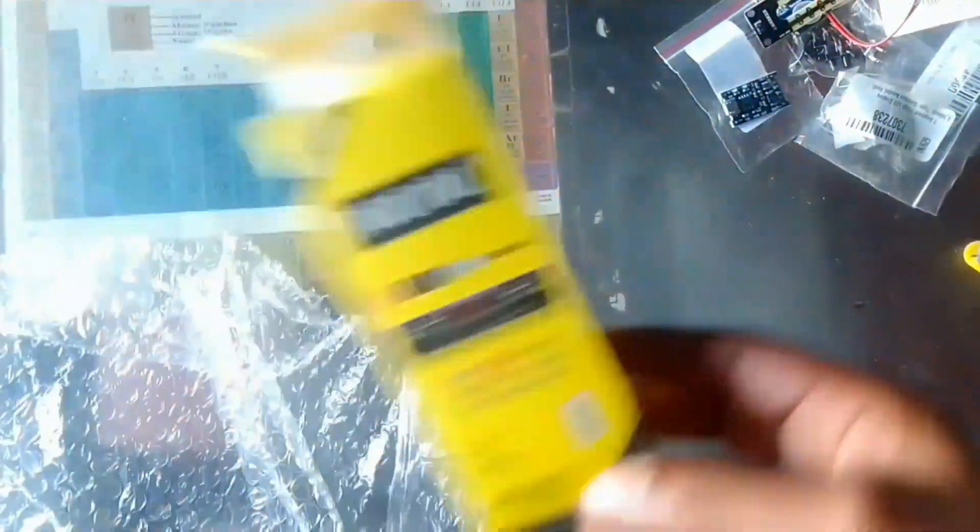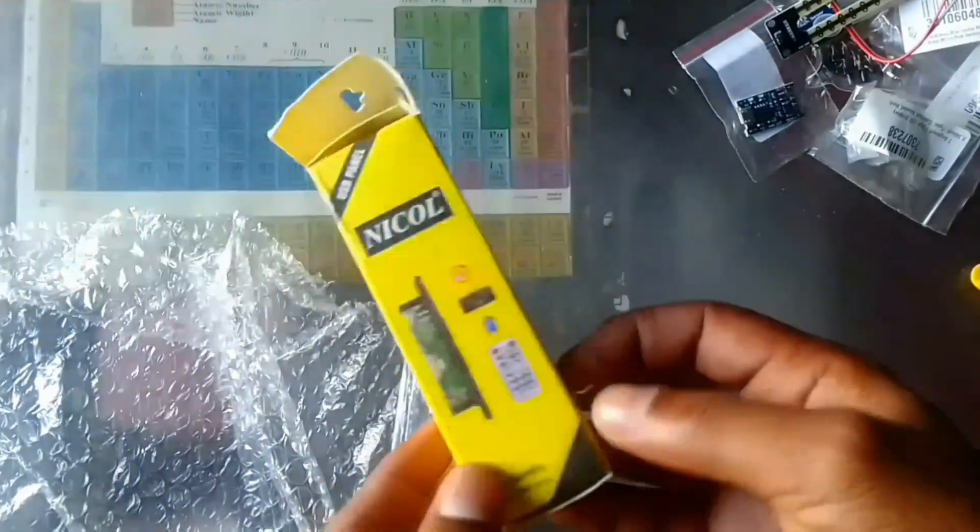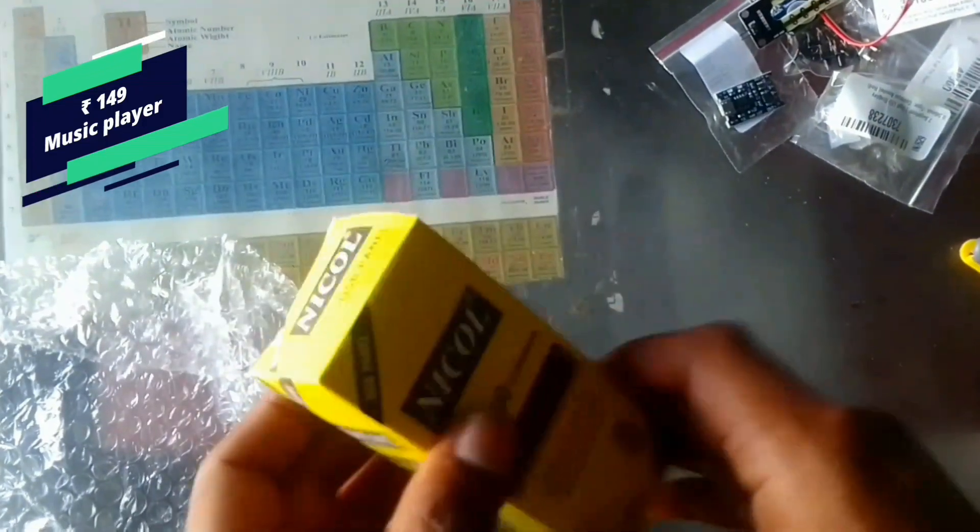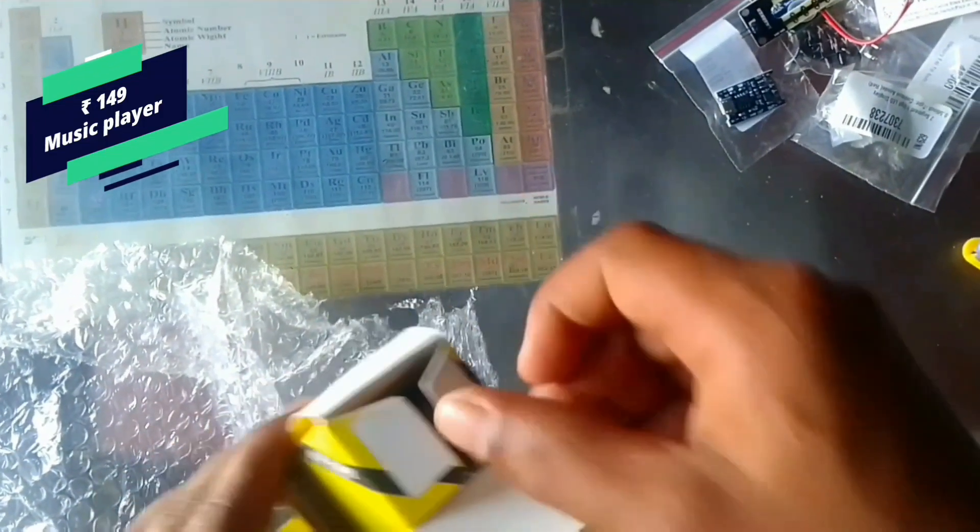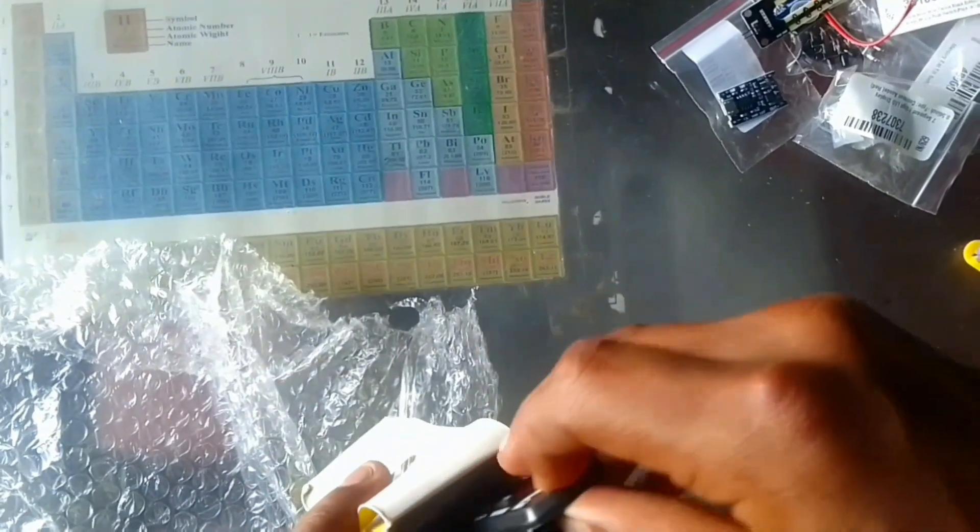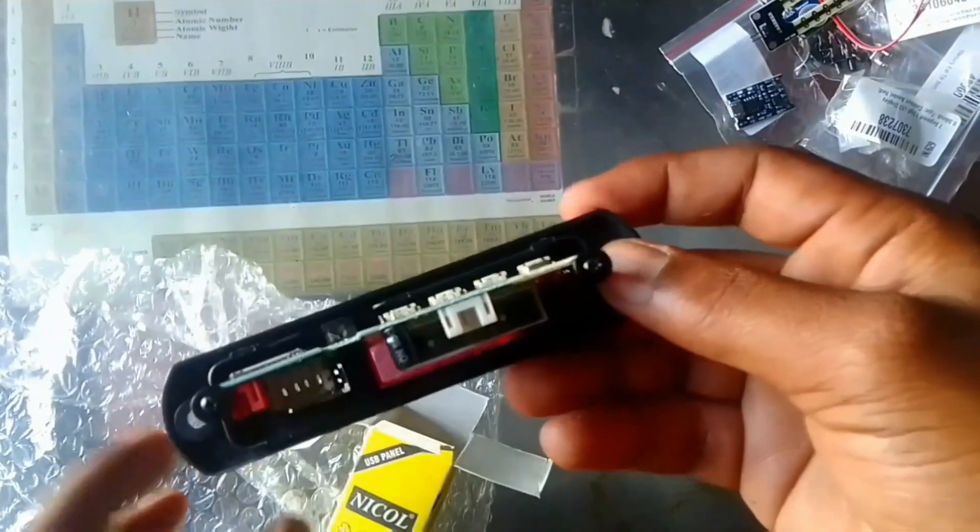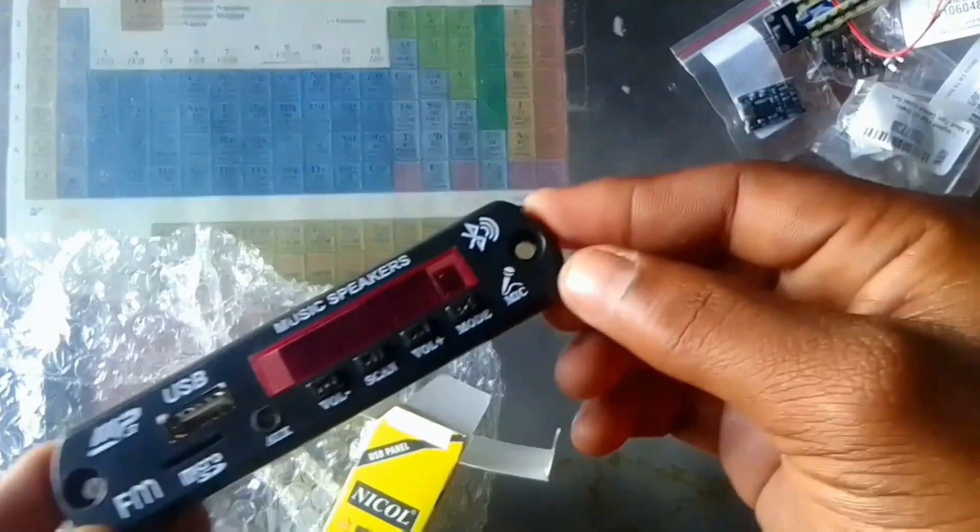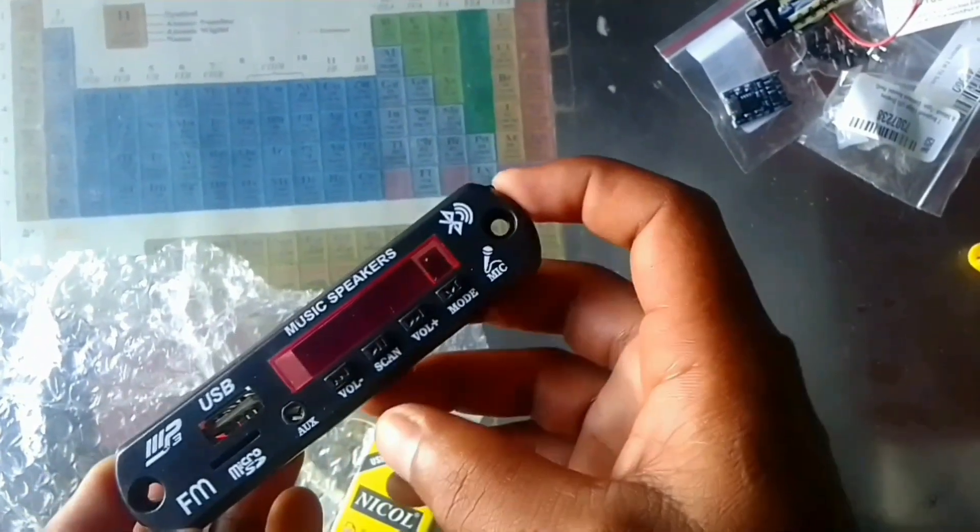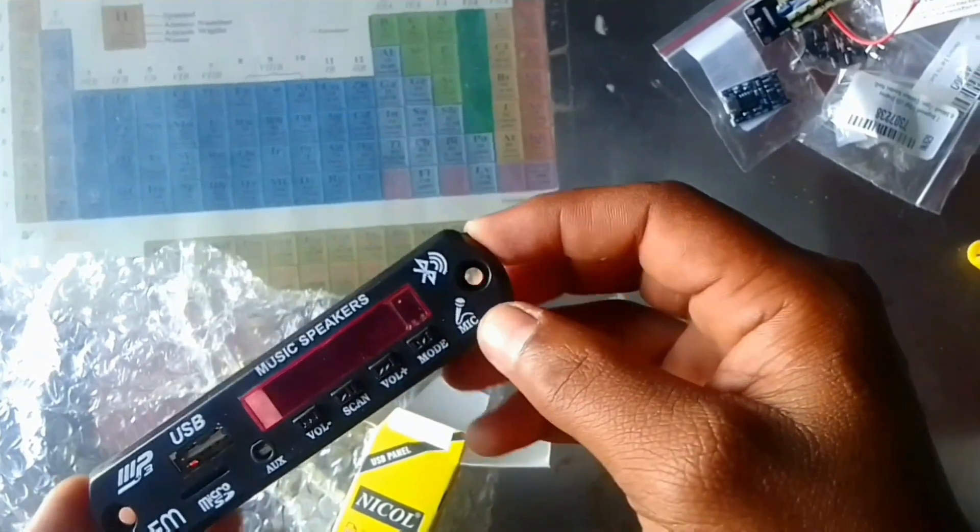And this is the last product - it is audio amplifier. I am going to do next experiment with this audio amplifier. Mini Bluetooth speaker, it is only 149 rupees. You can get more features like Bluetooth, FM, USB, SD card, aux pin and more.